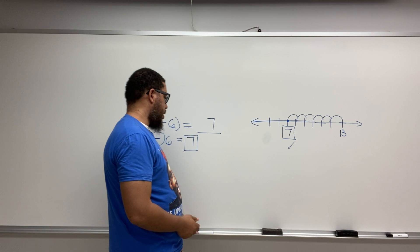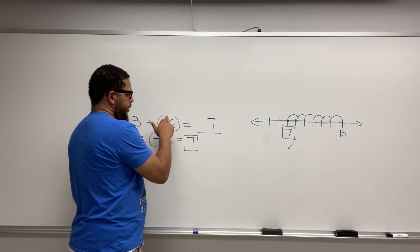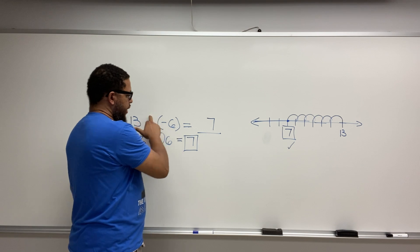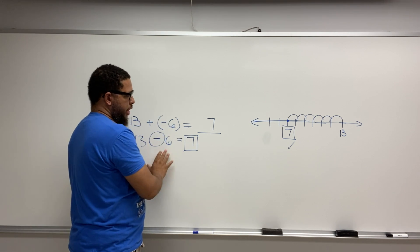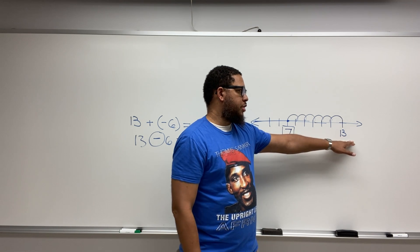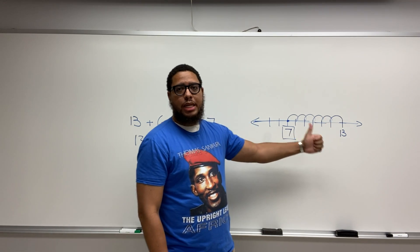So just keep in mind, once again, that when you add a negative, that's the same as doing subtraction. Adding a negative is the same as doing subtraction. And also, if you think about it in terms of the number line, you start at 13. And since you're doing subtraction, we're sliding to the left.